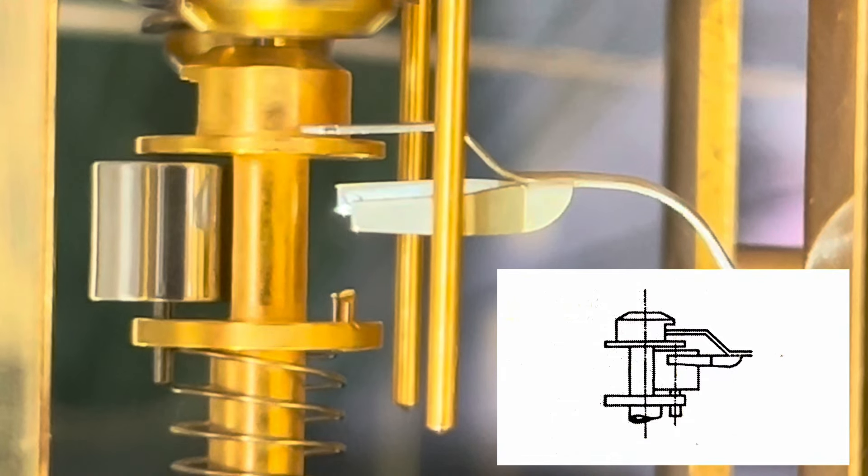That force is happening by the force of the mainspring. As it comes around, we're going to impact, catch that fork. Right there. Now we're pushing the fork. We're releasing the impulse roller, and we're catching the escapement one more time. It's getting set up again. Let's watch that happen again.